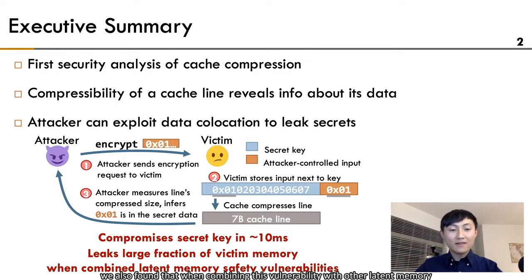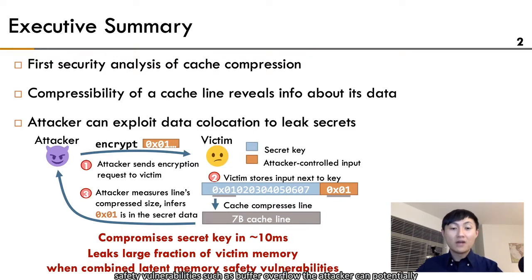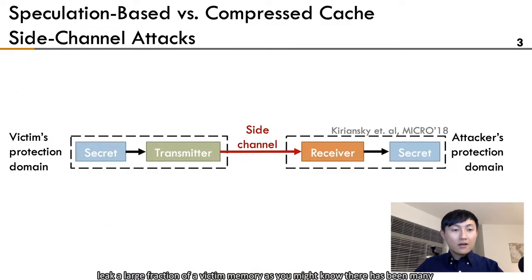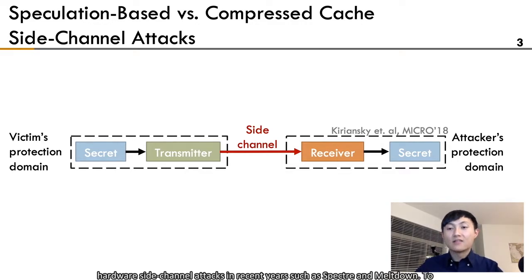We also found that when combining this vulnerability with other latent memory safety vulnerabilities such as buffer overflow, the attacker can potentially leak a large fraction of victim memory. As you might know, there have been many hardware side-channel attacks in recent years, such as Spectre and Meltdown.